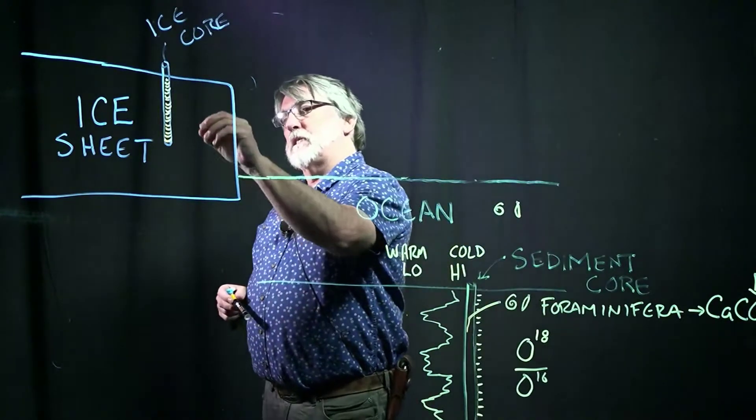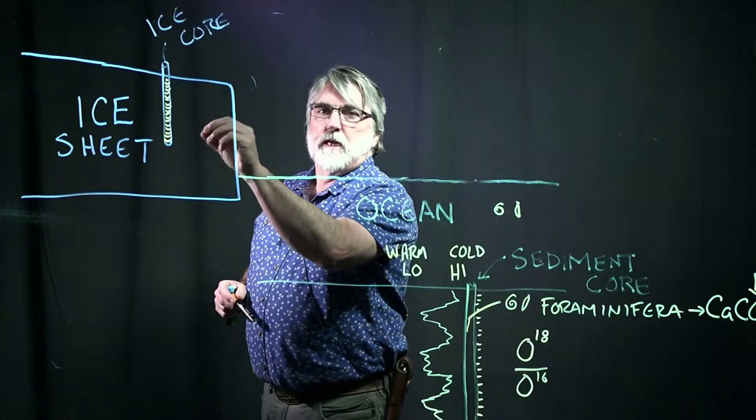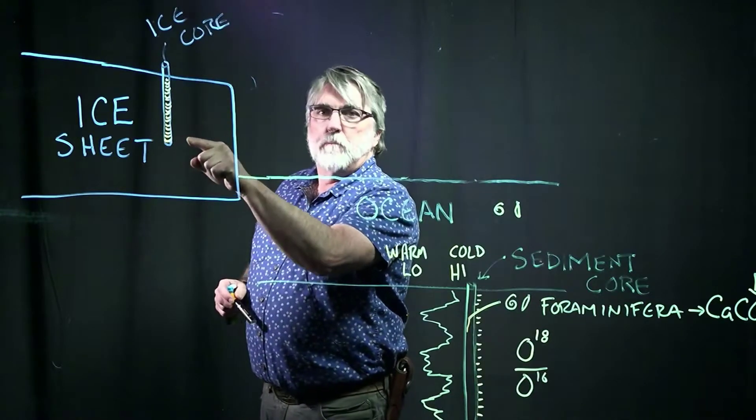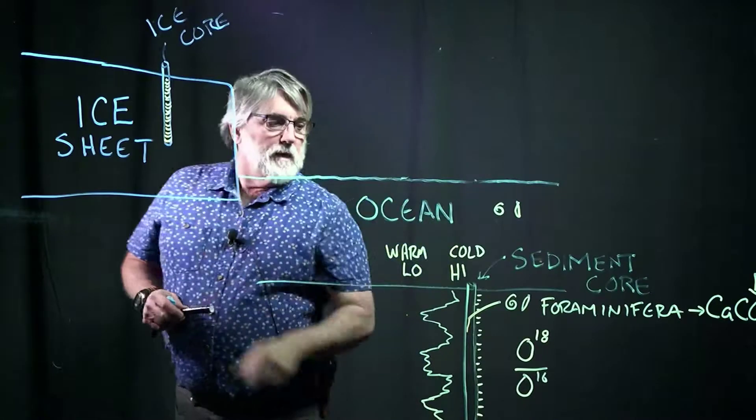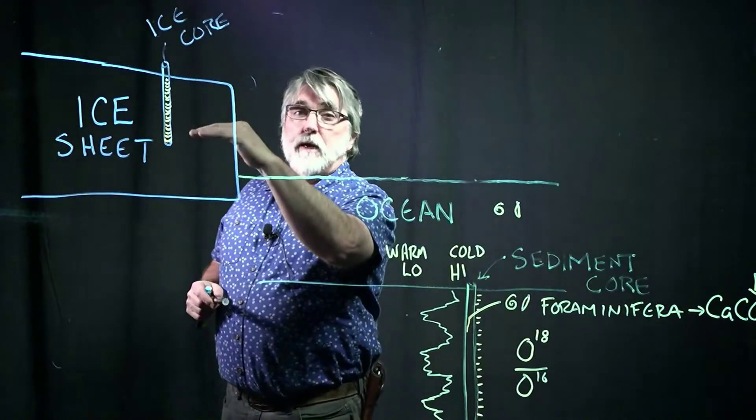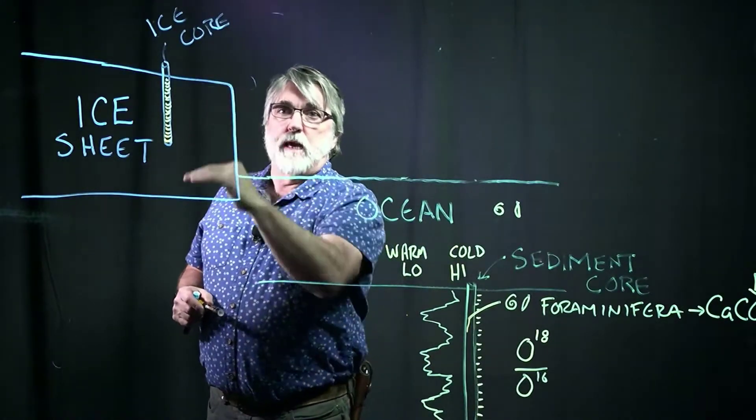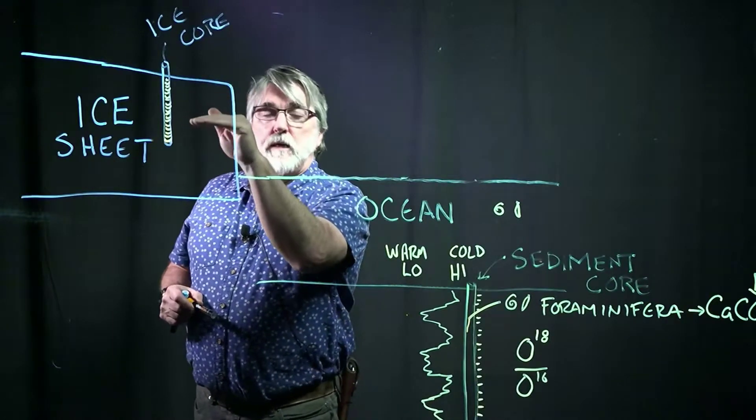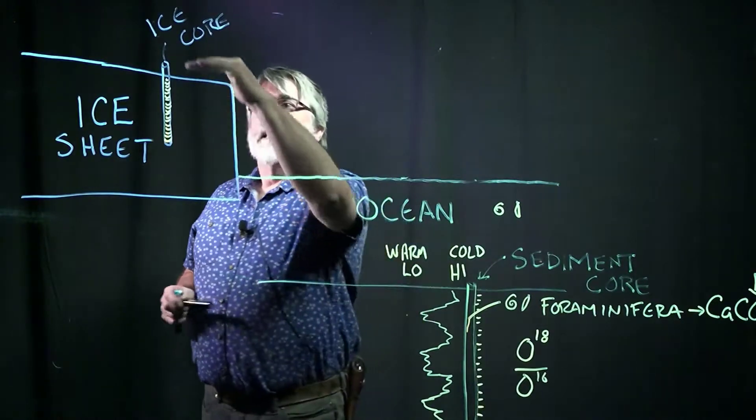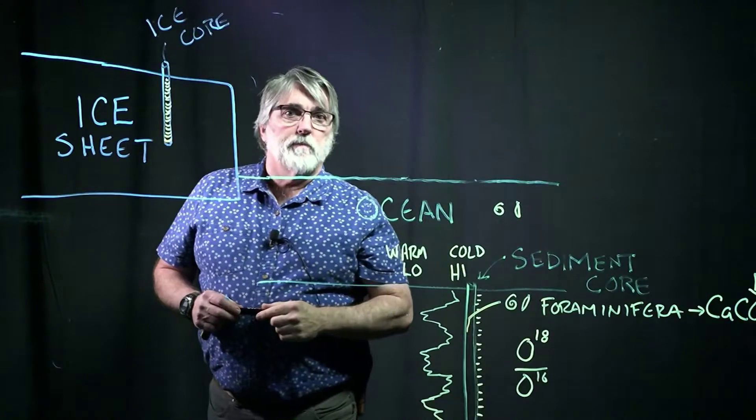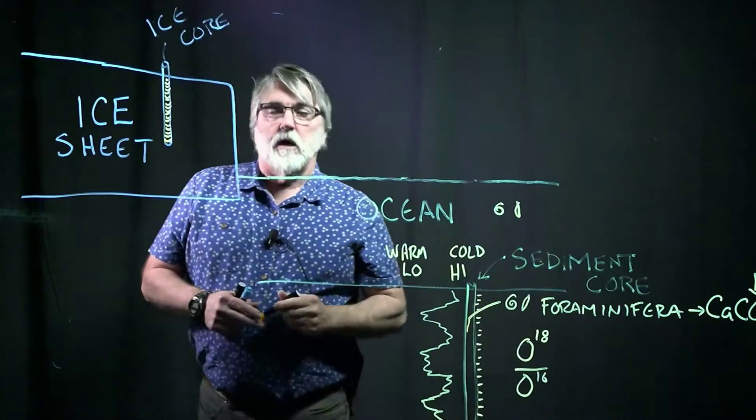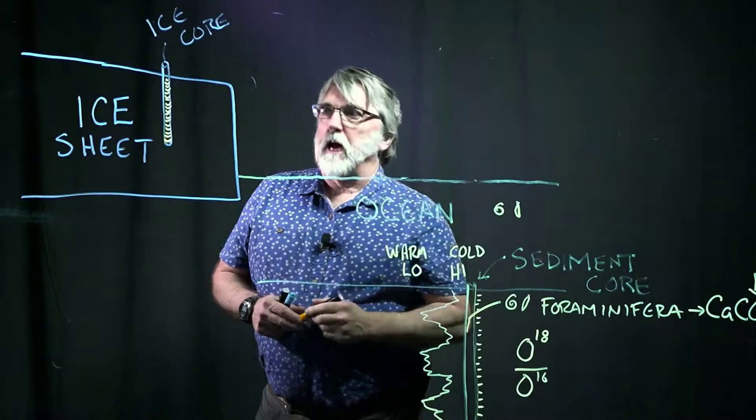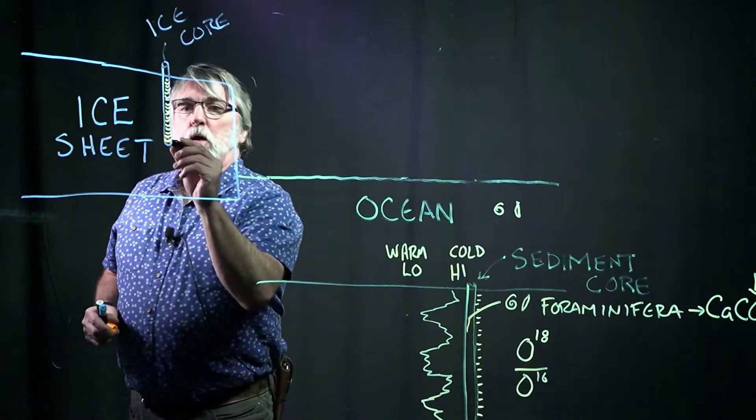So we can actually sample the atmospheric chemistry from the bubbles in these ice cores. So we can do the same thing that we did here. We can either count the layers, which tend to be annual. We can also find carbon in these that we can date so we know the age of the ice core going down through the core.